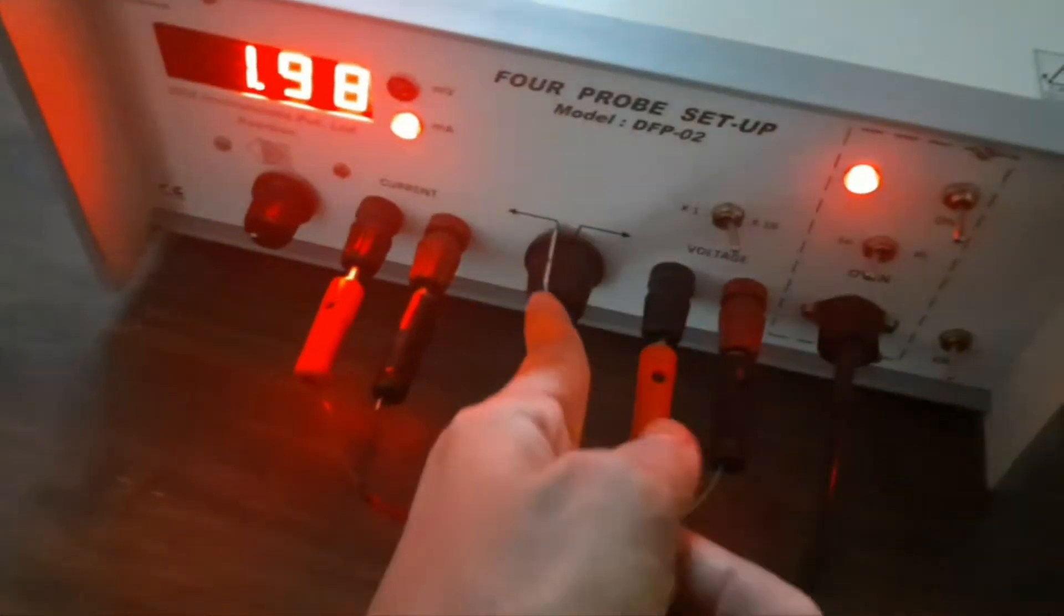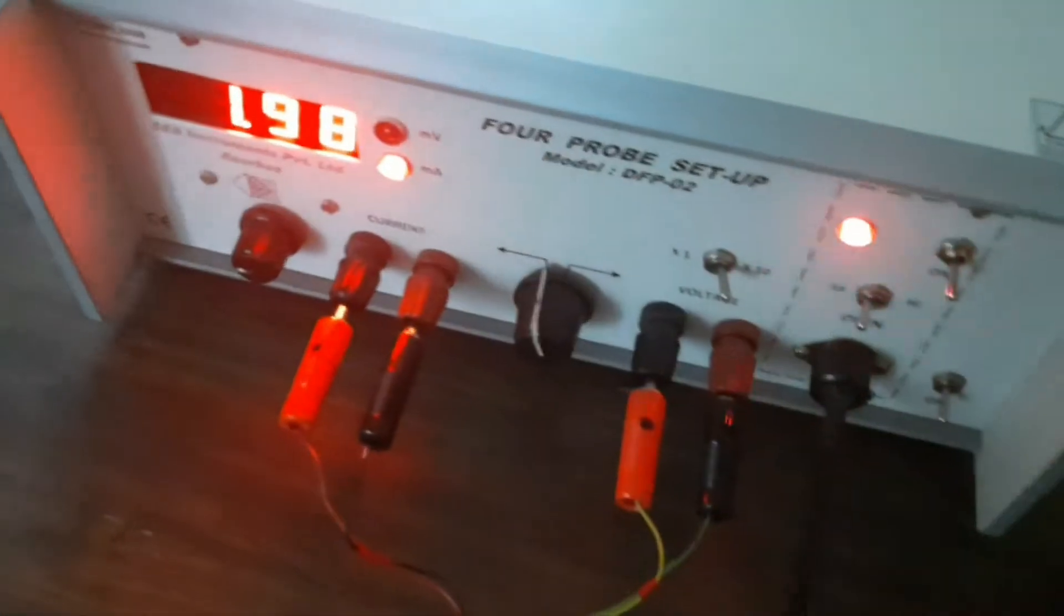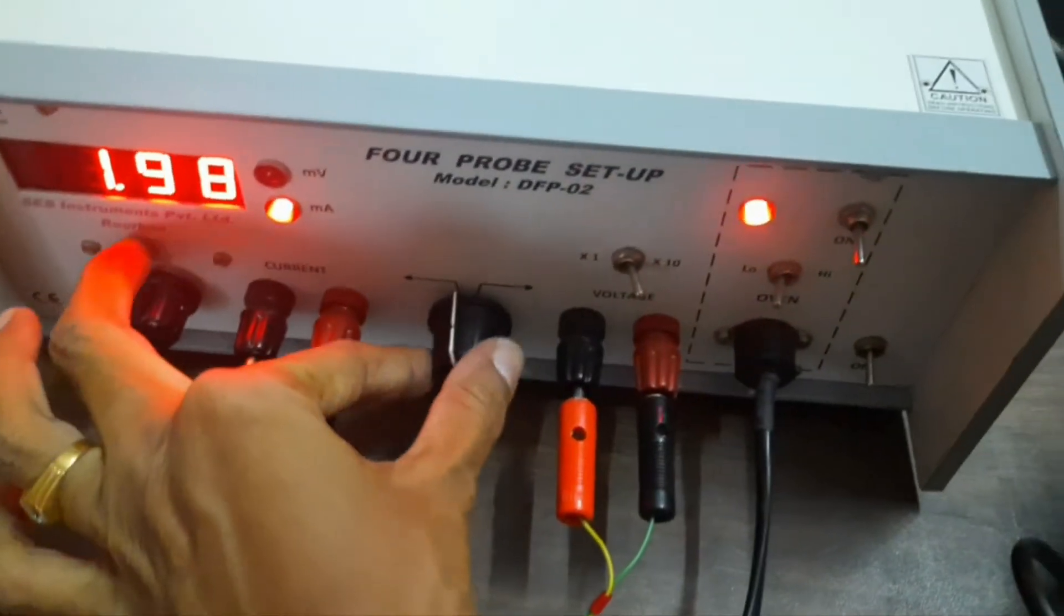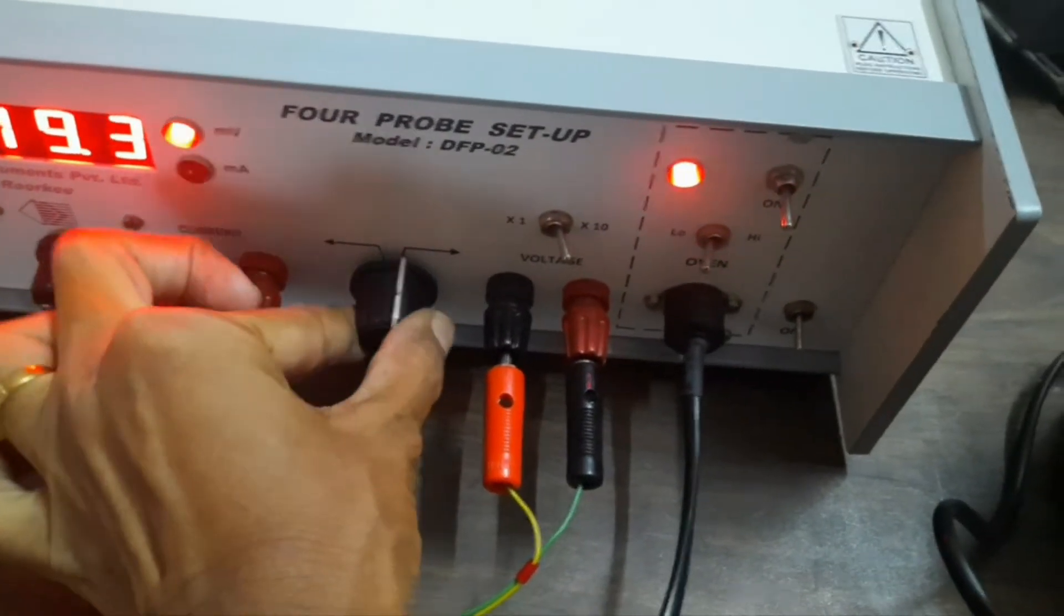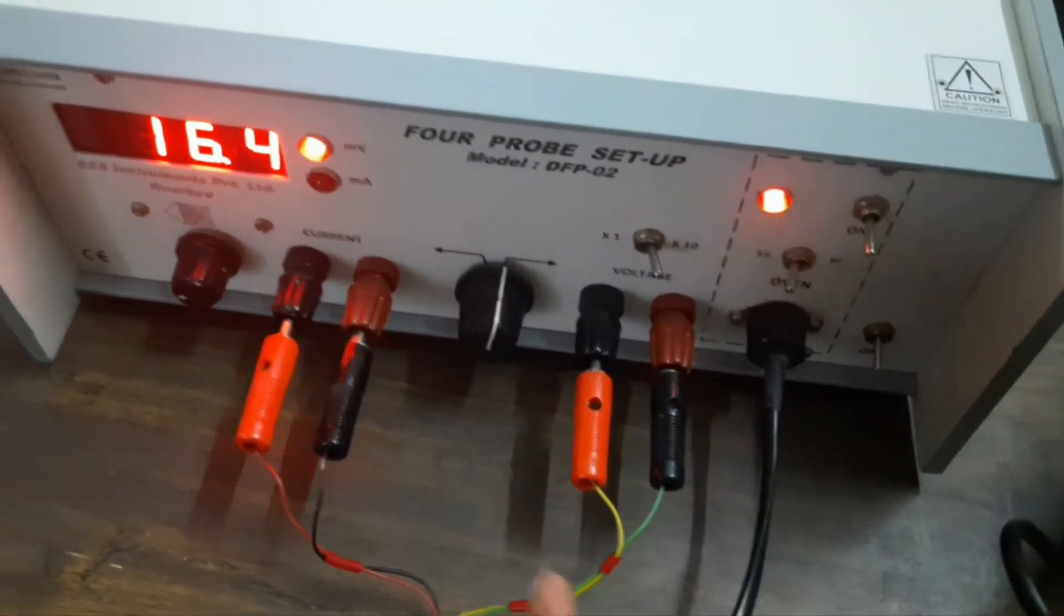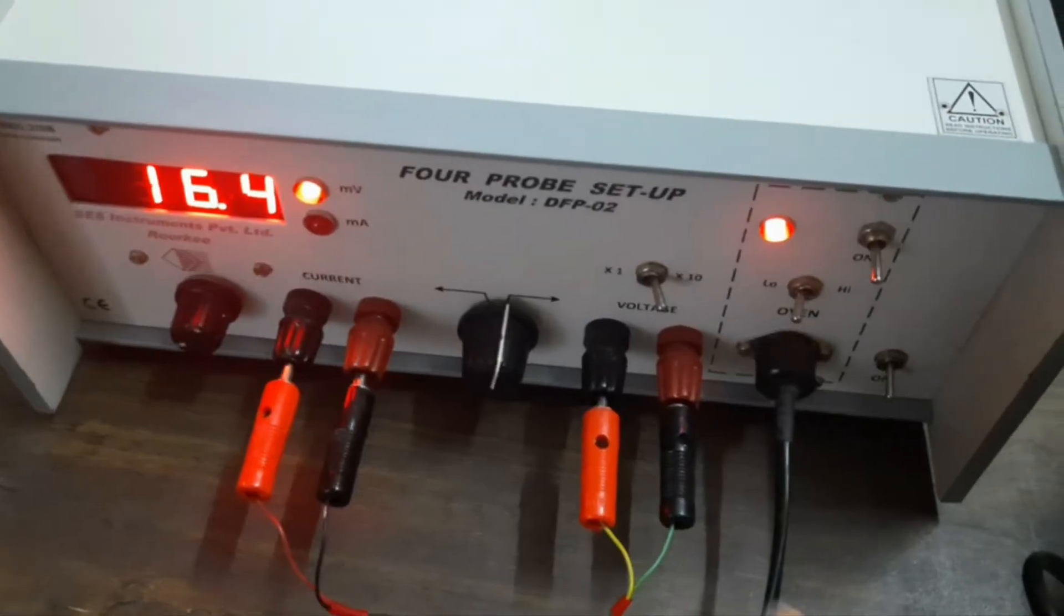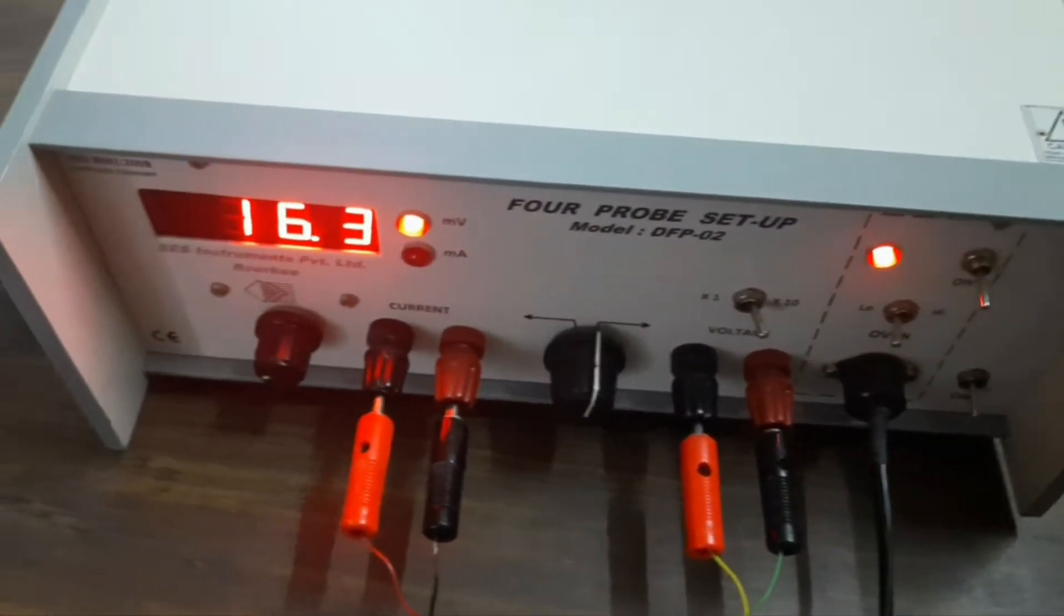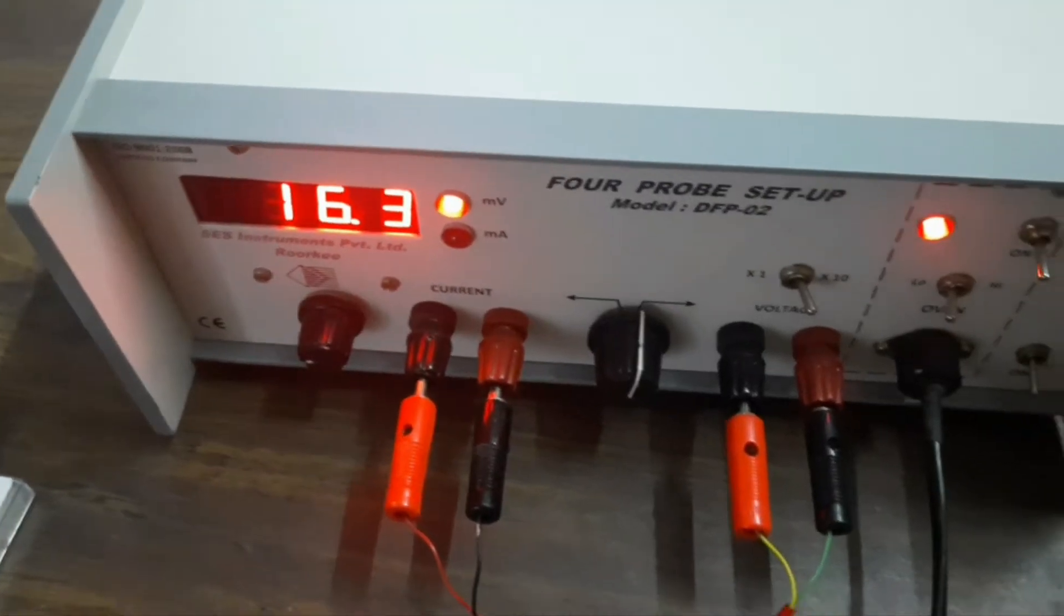If we want to note on the voltage, we should keep this knob at the voltage mode. Voltage mode we have to keep. So here we have to, this is in millivolt, 16.3 mV, like this.